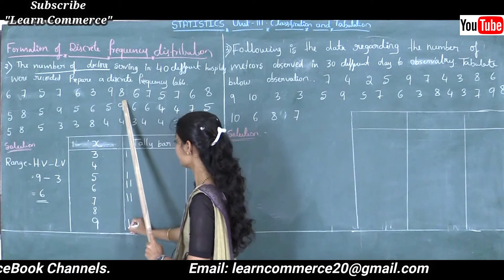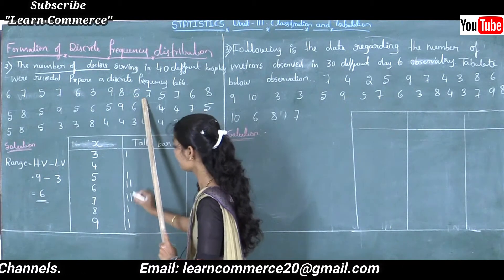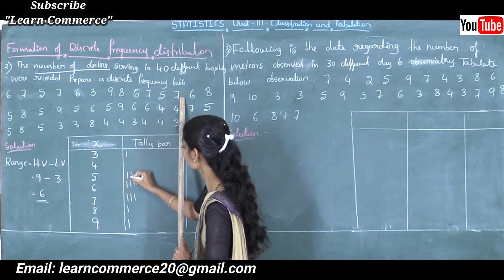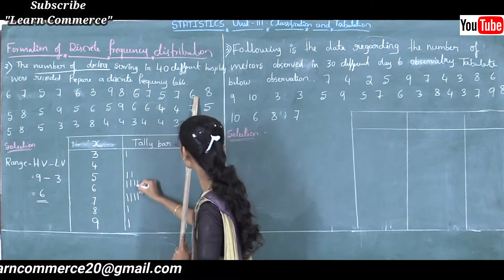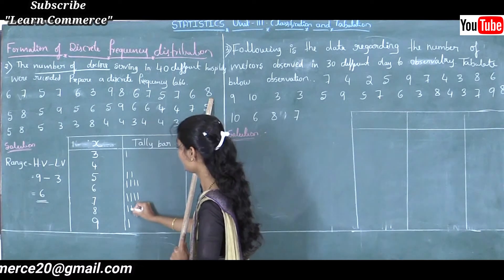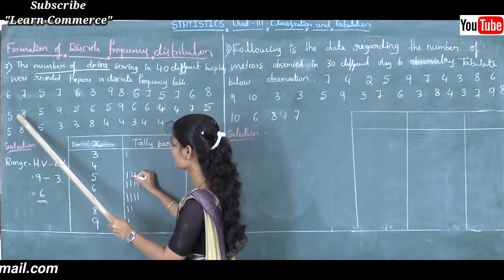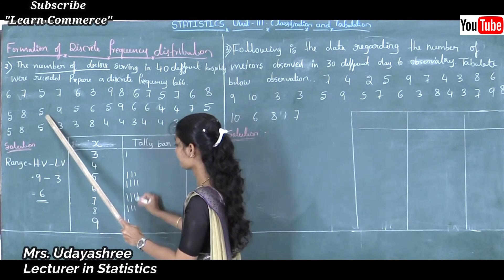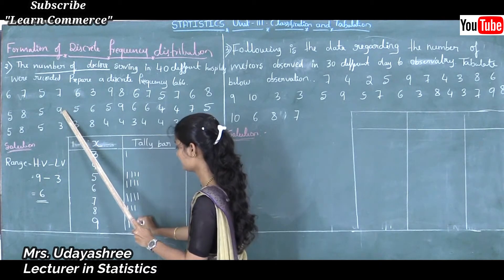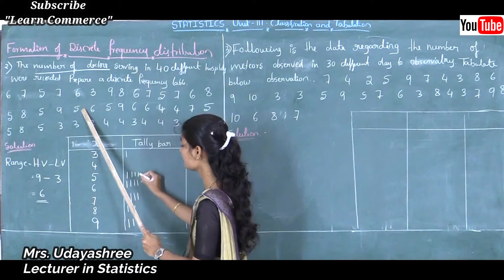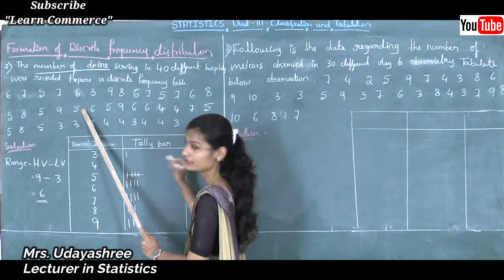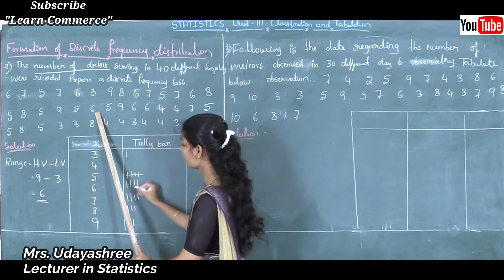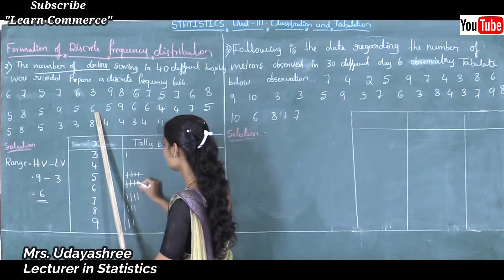Continuing: next is 6, 7, 5, 7, 6, 8, 5, then 8. Next is 5, 9, then 5. Here 4 marks are over for that value, so the 5th one goes like this — crossing the four marks. Next is 6. In front of 6, there are also 4 marks already, so the 5th one like this.